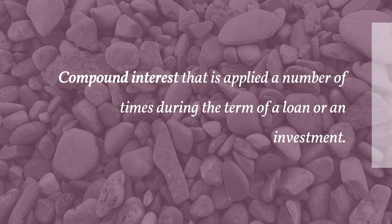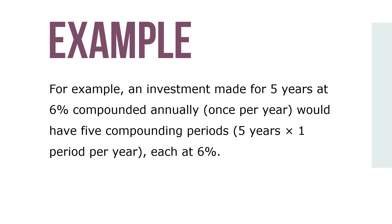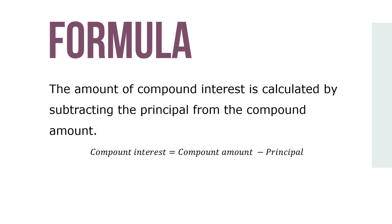Compound interest is applied a number of times during a term of a loan or investment — it is interest paid on principal and previously earned interest. To manually calculate the compound amount or future value, we must compound the interest as many times as there are compounding periods at the interest rate per period. For example, an investment made for 5 years at 6% compounded annually has 5 compounding periods, each at 6%. Compounded semi-annually, there would be 10 compounding periods — 5 years times 2 periods each year — each at 3% (6% divided by 2). The amount of compound interest equals the compound amount minus the principal.